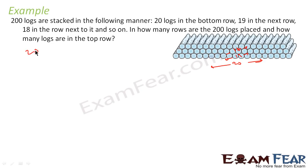This is also an AP: 20, 19, 18, 17, and so on, where A is equal to 20 and D is equal to minus 1. Sum is given, sum is 200.